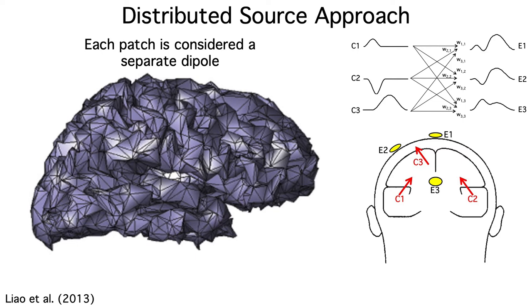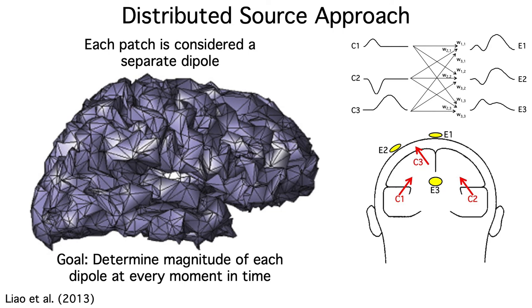Now, instead of just having a handful of sources, we have thousands of sources. But the structural MRI data tell us the locations and the orientations. We just need to figure out the magnitude for each patch at each moment in time.